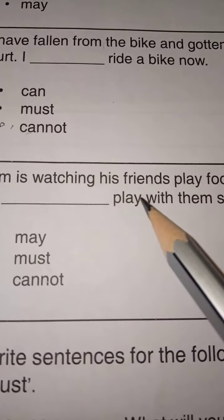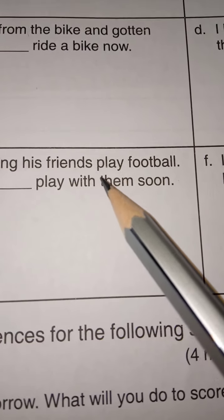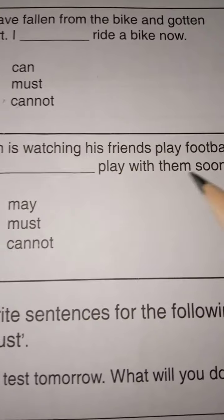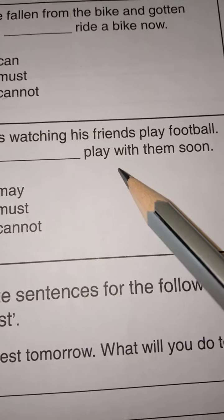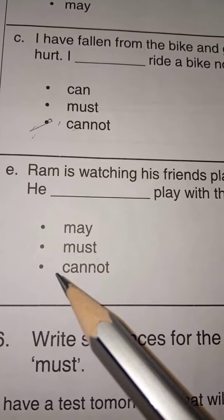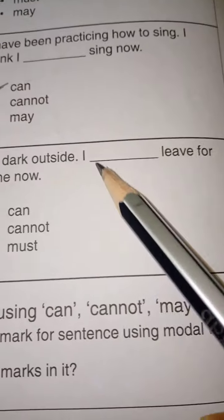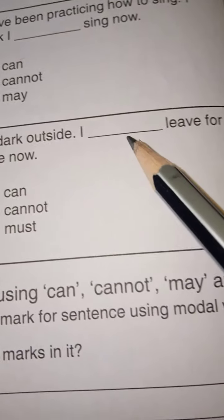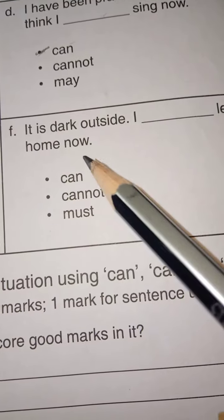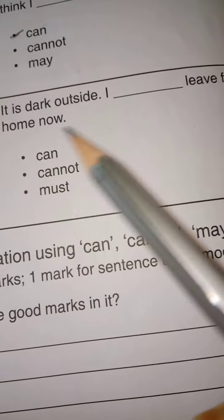Ram is watching his friends play football. He does play with them soon. He may play with them soon. May, write. It is dark outside. I dare leave for home now. It is dark outside. I cannot leave for home. Or, wait, wait.